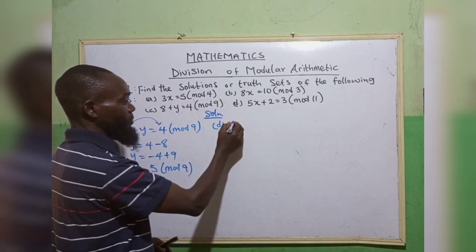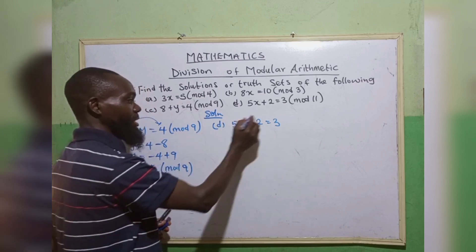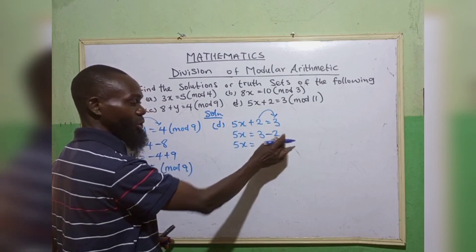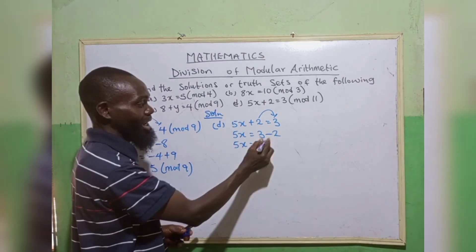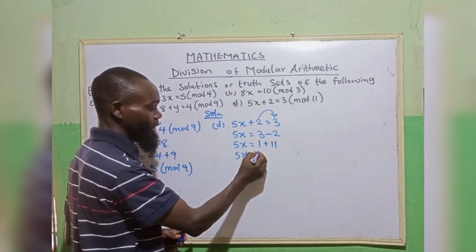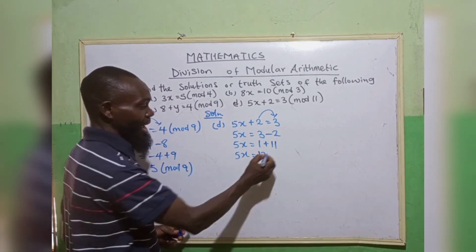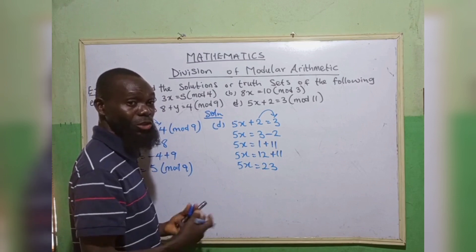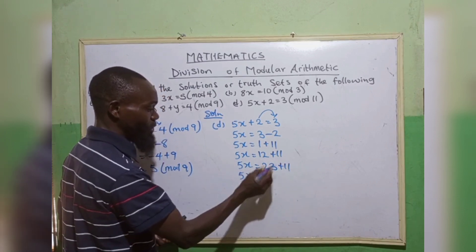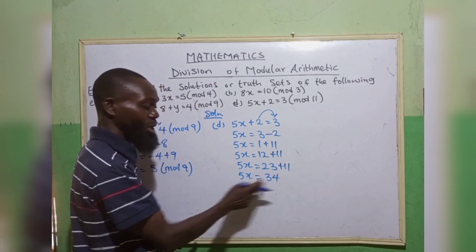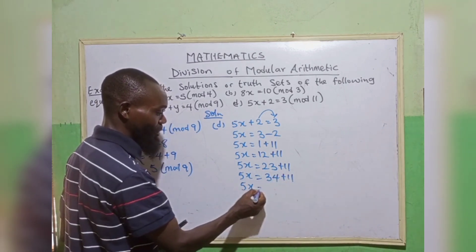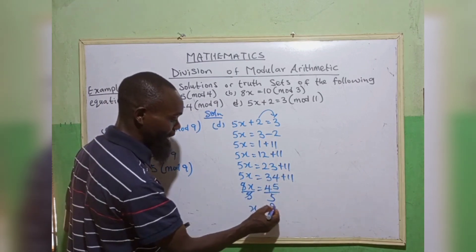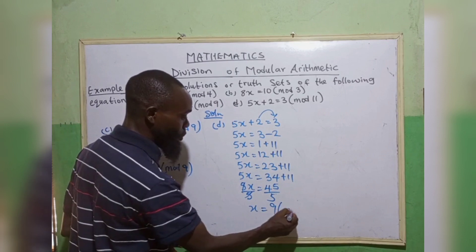Now question D. 5x plus 2 equals to 3 in mode 11. You collect like terms. 5x is equal to 3 minus 2, we have 1. 5 cannot go in 1. We add modulo 11. 5x equals 12. 5 cannot go in 12 without remainder. Add 11. 5x equals 23. 5 cannot go in 23. Add 11, we have 34. 5 cannot go in 34. Add 11. 5x equals 45. Now 5 can go in 45. So x equals to 9 in mode 11.